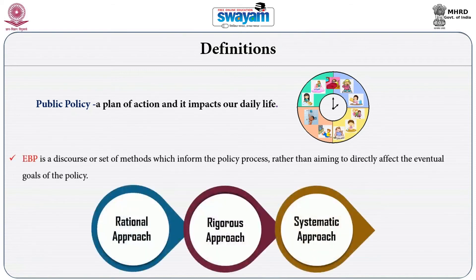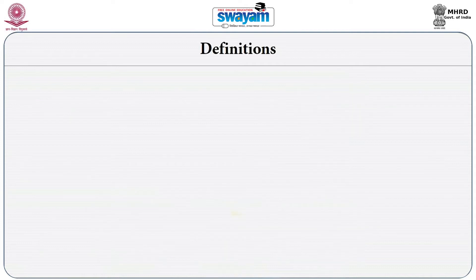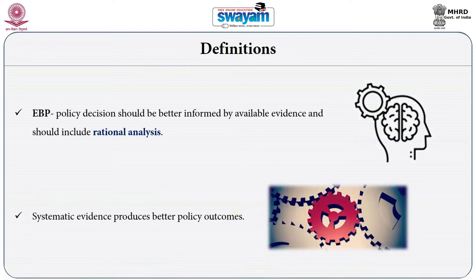Now let me establish a connection between evidence and public policy. What is the evidence we have been talking about? We have been talking about evidence which is rigorous in terms of analysis, which is scientific in nature, and which stands up to scrutiny of rationality in its policy analysis. Public policies should have available evidence instead of simply relying on beliefs and assumptions without any documentation. That is what is required in policy analysis.